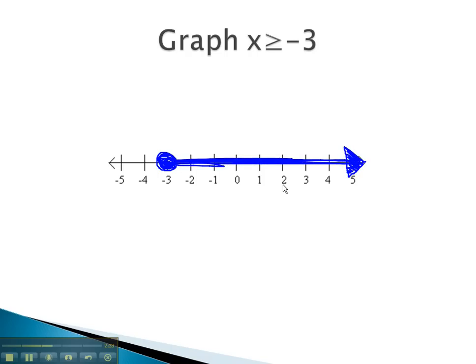This means any number in the shading, for example, 2, would be greater than or equal to negative 3.